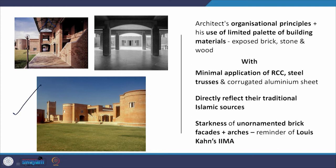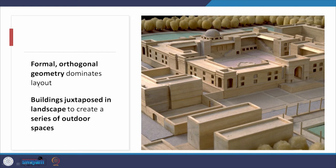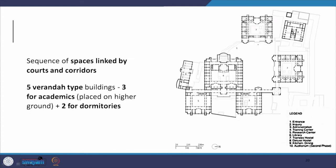The silence you feel in this project — the sense of serenity that Kahn generates in IIM Ahmedabad and the Salk Institute — Bimal Patel tries to create that same feeling of simplicity. The formal orthogonal geometry dominates the layout. There are a series of courts, large and small, and the buildings are juxtaposed in the landscape to create these series of outdoor spaces. The sequences of spaces are linked by courts and corridors, something that was there in traditional Indian architecture. We are already seeing an example of regional modernism or critical regionalism in EDII.